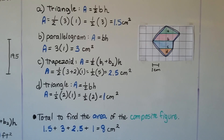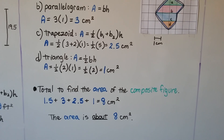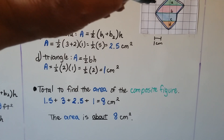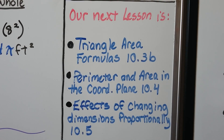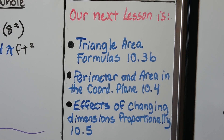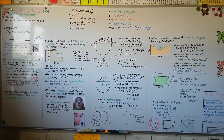But we were just estimating, so the area is about 8 cm² — just an estimate because we didn't follow exactly inside the curves. Our next lesson is triangle area formulas, 10.3b, the second part of this lesson. Then we'll get into 10.4 on perimeter and area in the coordinate plane, and 10.5 on effects of changing dimensions proportionally. I hope I explained this well enough so you were able to follow along. If you had any trouble, try going back and watching the video again. I hope you're doing well and I'll see you for the next part of this lesson.